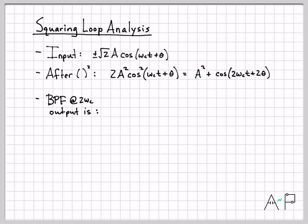And then our bandpass filter. So this is what goes through the bandpass filter. That bandpass filter is set up to pass out the component at 2 omega c. So it's going to reject this DC component.